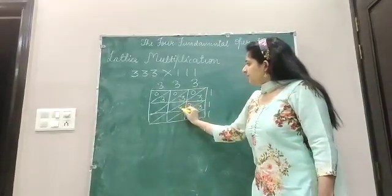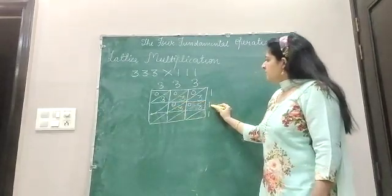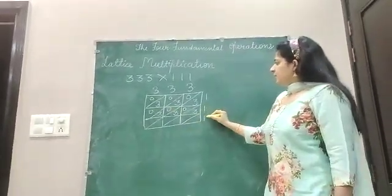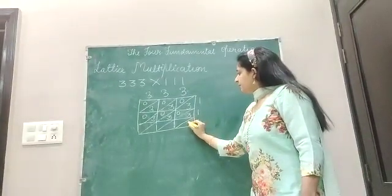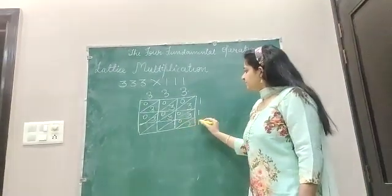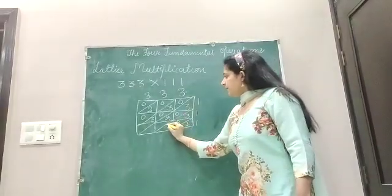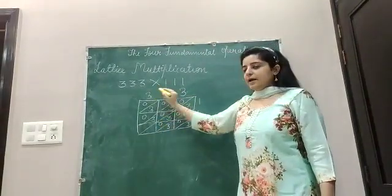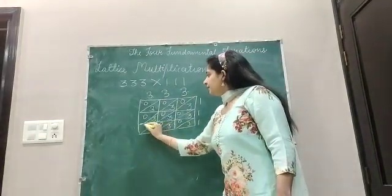1 multiplied by 3 is 3, and here 0. Again, 1 multiplied by 3 is 3, and on the top 0. 1 multiplied by 3 is 3, then 0. 1 multiplied by 3 is 3, and then 0.